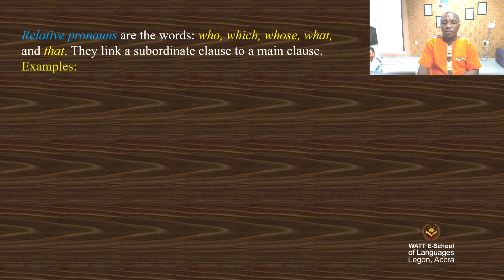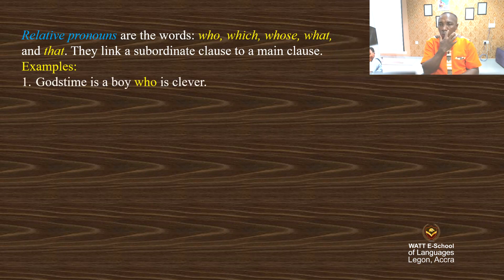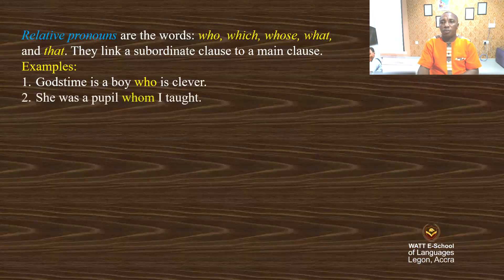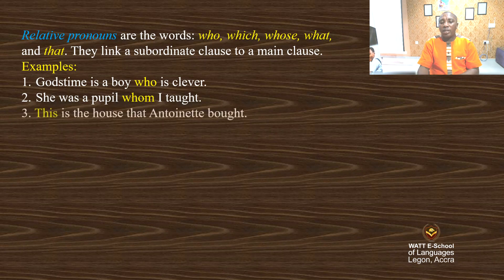Example: Gustav is a boy who is clever. She was a person whom I taught. This is the house that he works in.